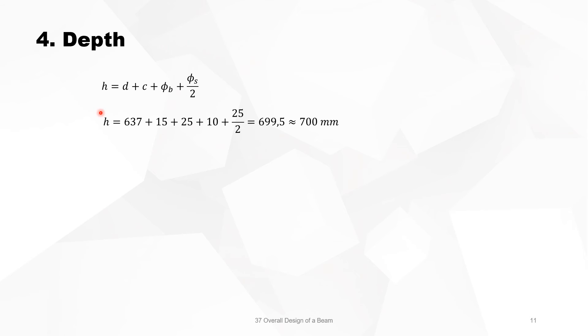The total depth is now the d-optimum plus 15 plus 25, which is the concrete cover, plus 10 plus 25 divided by 2, we have chosen diameter 25, gives you 699.5, so 700 mm. So that's a good thing, because now we have a beam dimension of 700×350.